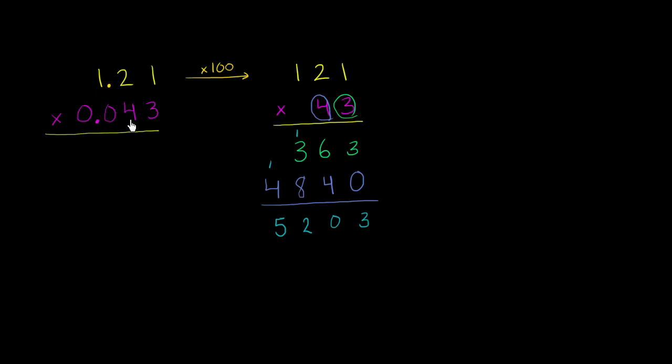And to go from 0.043 to 43, what are we doing? We're removing the decimal. Let's see, we're multiplying by 10, 100, 1,000. We're multiplying by 1,000.